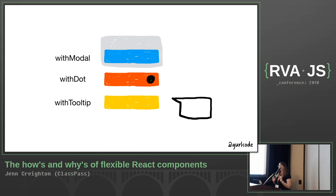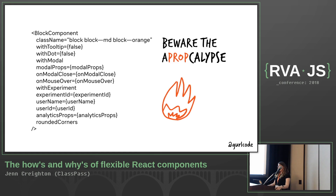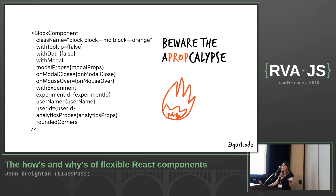The apropcalypse — the dreaded, dreaded apropcalypse. Our simple block component is now overrun with props. What now? Is this component still flexible? Nothing has changed about its reusability — it's still handling multiple UI cases based on what props you provide — but I'd argue this isn't a flexible component, and that our idea of reuse can sometimes blind us to better, more flexible patterns.